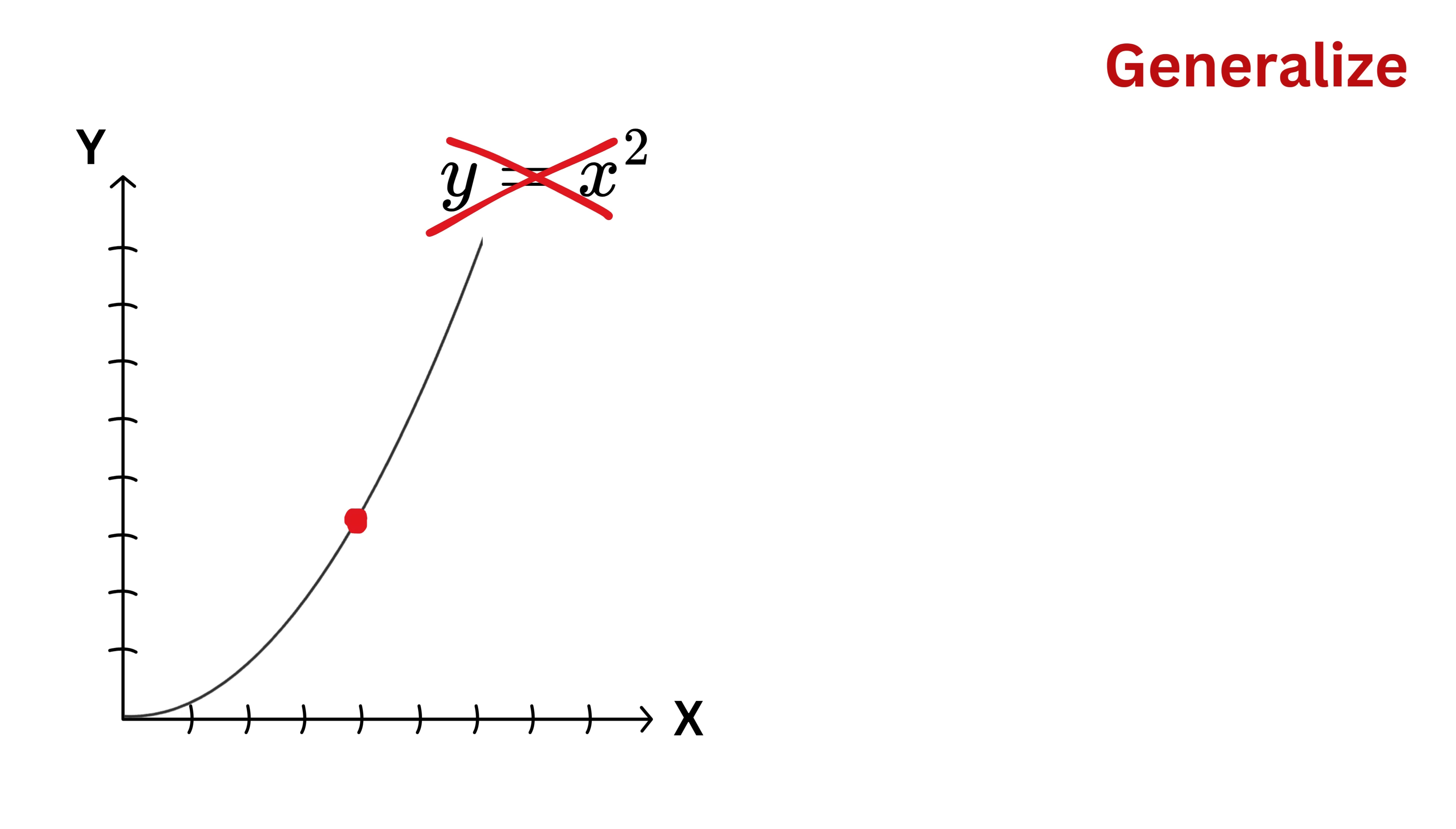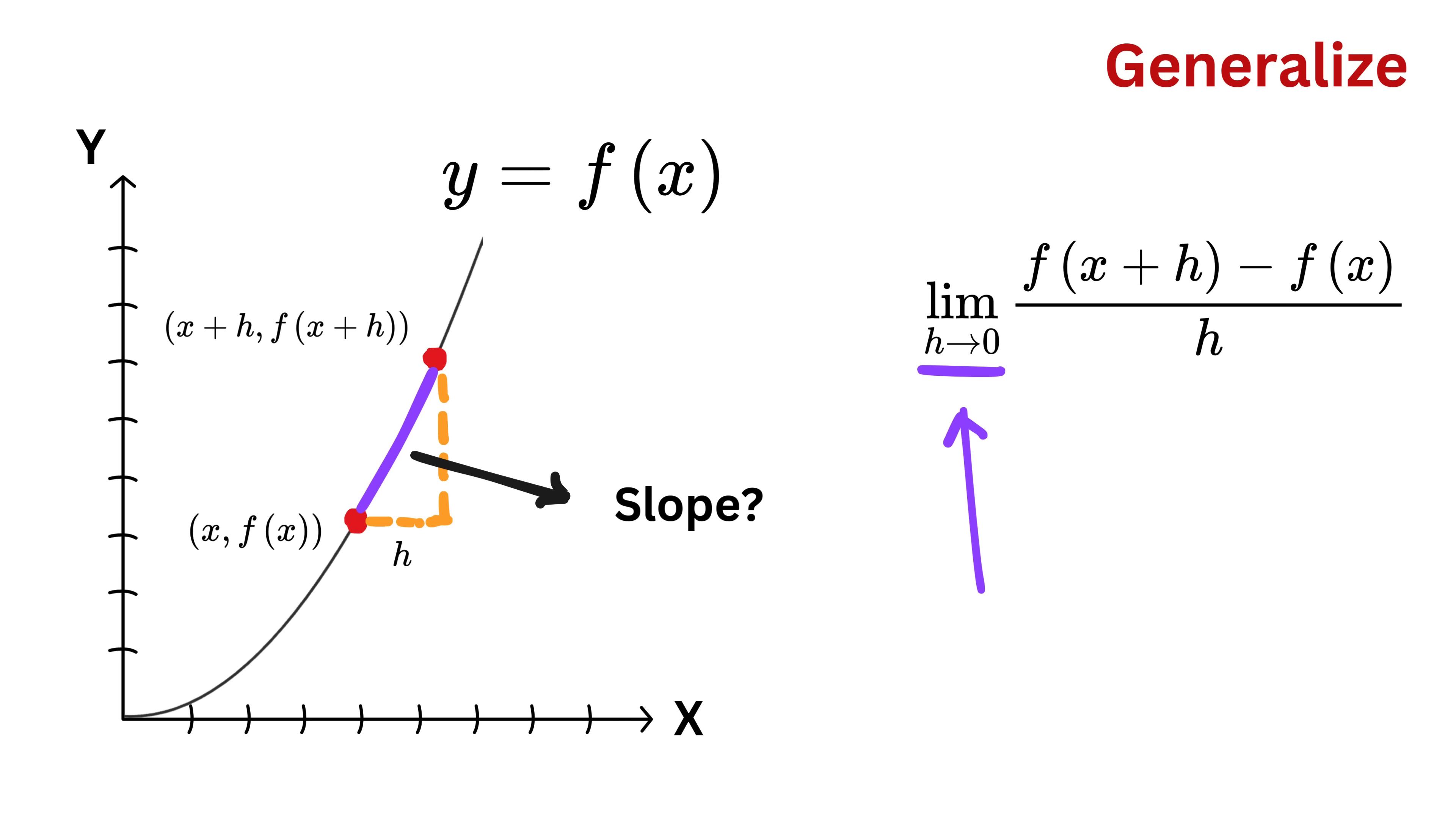Now, to generalize this, instead of using x squared, assume we denote y as a function of x or f of x. Now, at this point x, we have y as f of x and at this point which is x plus h, we have y, or the output, when the input is x plus h as f of x plus h. So, the slope of this line will be f of x plus h minus f of x over x plus h minus x. This will get cancelled out and we are left with f of x plus h minus f of x over h. Finally, we put a limit here which shows h tends to 0 and that's it. This is the derivative of the function y, or f of x, with respect to x.